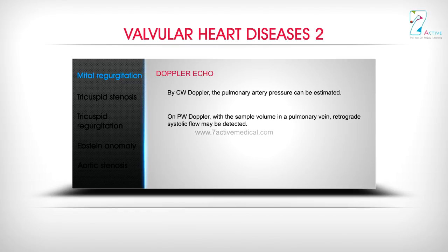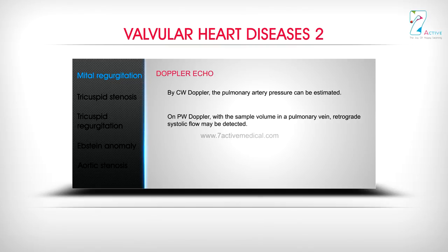On PW Doppler, with the sample volume in a pulmonary vein, retrograde systolic flow may be detected.